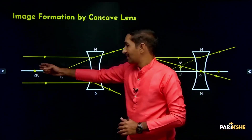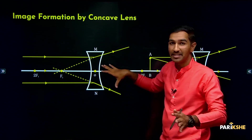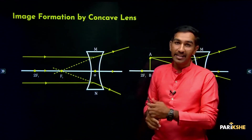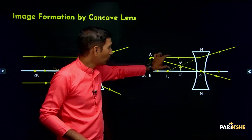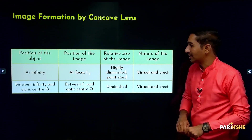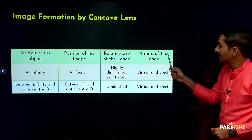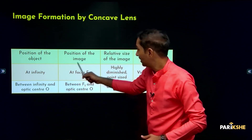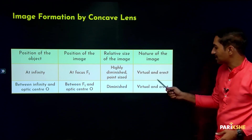To summarize: when the object is at infinity — parallel rays refract, appearing to come from F1, image is highly diminished. When the object is between infinity and optic center O, image forms in between F1 and O. Summary table: object at infinity → image at F1, size highly diminished, nature virtual and erect. Object between infinity and O → image between F1 and O, size diminished, nature virtual and erect.